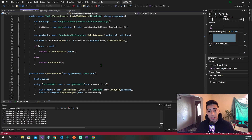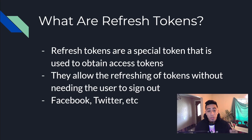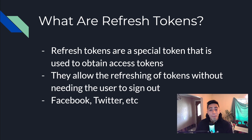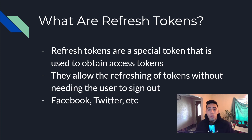Now let's move on to refresh tokens and how they work with JSON web tokens. A refresh token is a special token used to obtain access tokens — in our case, JWTs. This allows your JWTs to not need super long expiration dates in case one gets compromised. If it does get compromised, that bad actor does not have access for very long. If it never gets compromised, a valid refresh token tied to a user allows them to be issued a new JWT without needing to constantly sign in again.